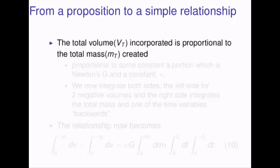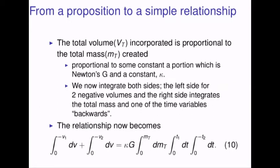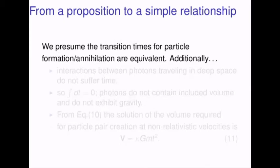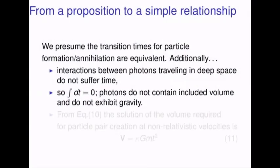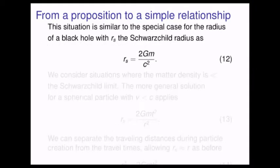The total volume V sub t incorporated is proportional to the total mass created, proportional to some constant — a portion of which is obviously Newton's G — and the constant kappa. We now integrate both sides: the left side for two negative volumes, and the right side integrates for the total mass and one of the time variables backwards. The relationship now becomes equation ten. We presume that transition times for particle formation and annihilation are equivalent. Interactions between photons traveling in deep space do not suffer time, so the integral with respect to time for a photon is zero — photons do not contain included volume and do not exhibit gravity. From equation ten, the solution of the volume required for particle pair creation at non-relativistic velocities is equation eleven.